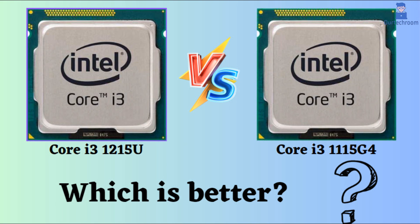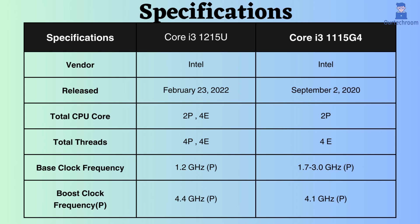In this video, I will compare the Intel Core i3-1215U and Intel Core i3-1215G4, highlighting their differences and then provide a conclusion to help determine which one is the better choice. Both of these are Intel processors, each with its own strengths and weaknesses. So, let's examine them.